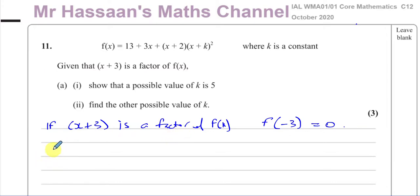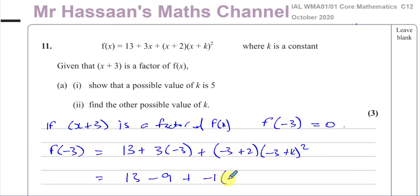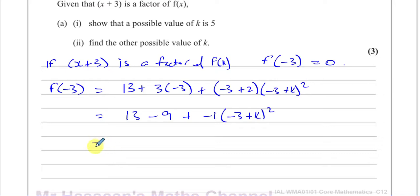So we're going to substitute minus 3 inside this function and see what we get. So we have 13 plus 3 times negative 3. You've got to be very careful here with signs in this kind of question. We've got negative 3 plus 2 times negative 3 plus k, squared. This is going to give you 13 take away 9, and you're going to have minus 1 times minus 3 plus k, squared, which is basically 4 minus k minus 3 squared.